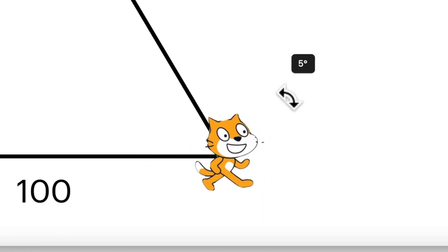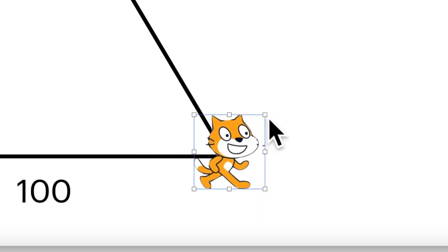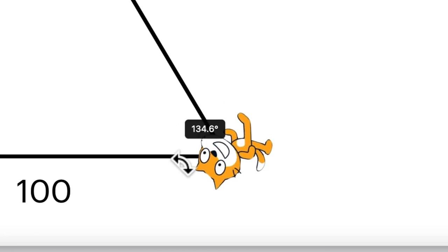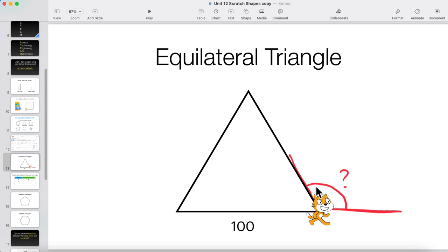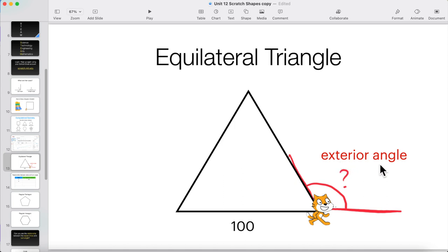So what should be this turn angle? From this position to this position. That is, we have to find this angle. And in terms of mathematical concept, this angle is known as the exterior angle of the equilateral triangle.